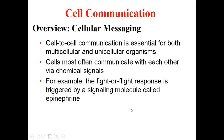Welcome to AP Biology. This video is on cell communication. Cell communication is essential for both multicellular and unicellular organisms. It allows one cell within the body to transmit information to another cell. This is done to coordinate activities like muscle contraction, and it's also used to regulate activities within the body. Cells are going to communicate with each other using chemical signals called ligands.